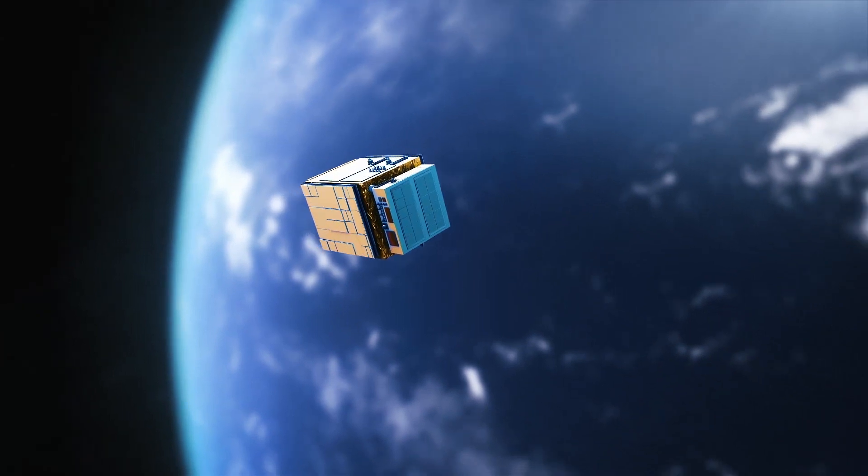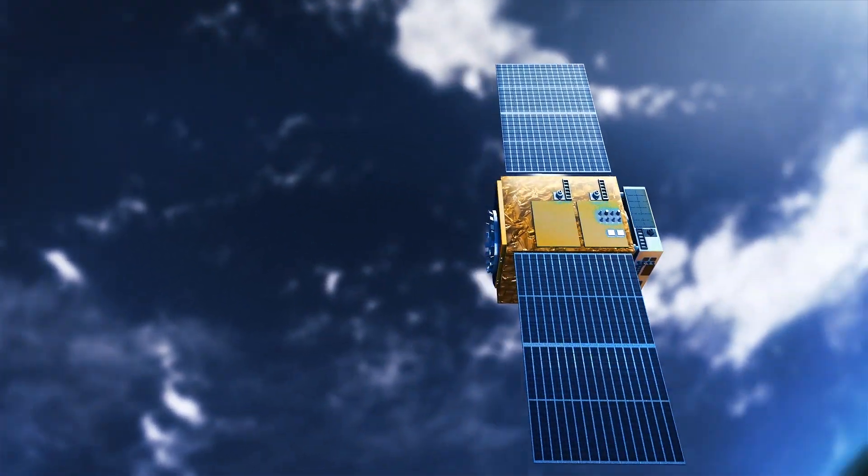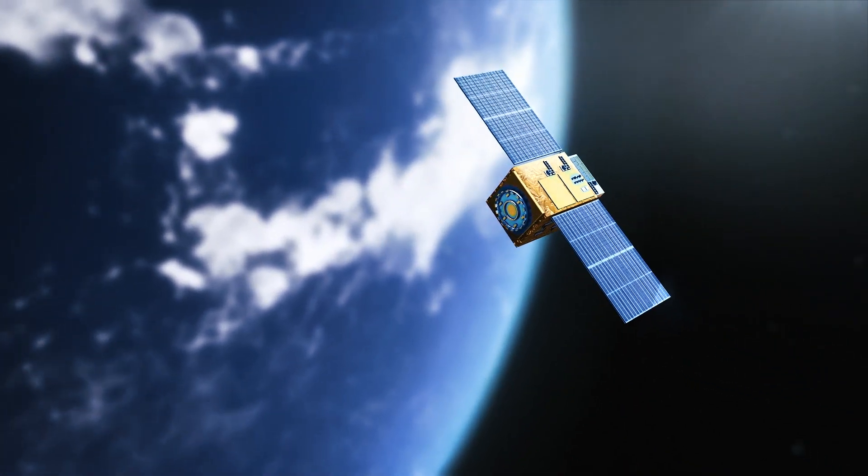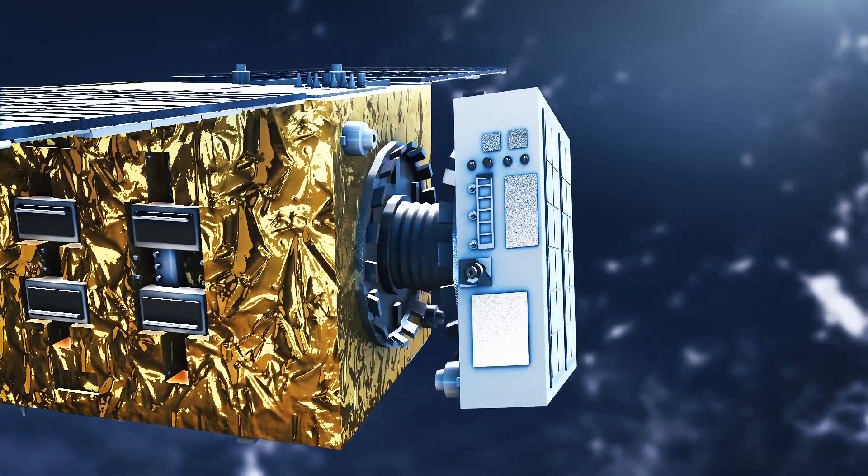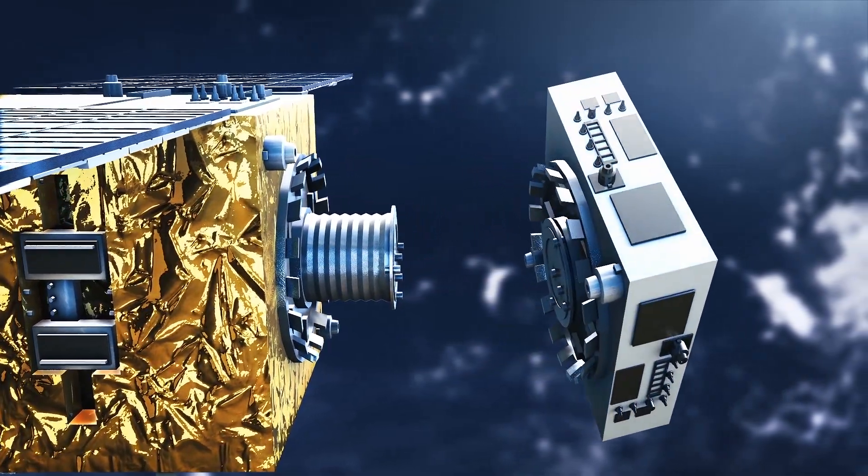It consists of two spacecraft: a 175-kilogram chaser and a 17-kilogram target. These two units will go up together on a Soyuz rocket from the Baikonur Cosmodrome in Kazakhstan and, once in orbit, separate to play multiple games of cat and mouse.